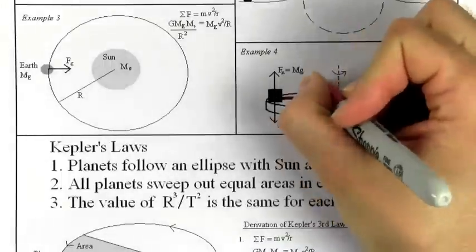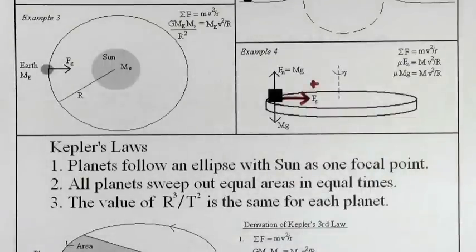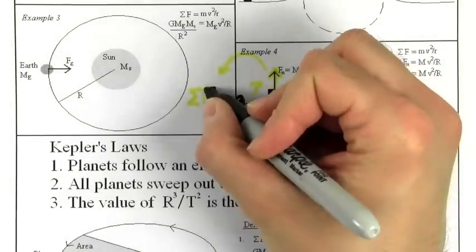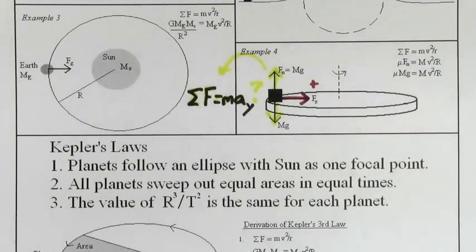In this case, static friction acts as a centripetal force and points toward the center of the circle. But what do you do with the normal force and mg? They don't point into or out of the circle. If a force does not point into or out of a circle, don't include it in sum of the forces equals mv squared over r. You can use sum of the forces equals ma in whatever direction they point, but don't include them in the centripetal forces calculation.